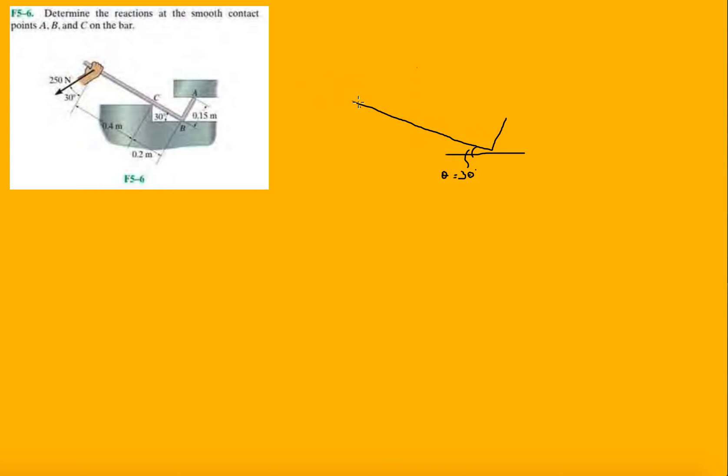But then we begin to question this, right? So we know that this right here is 30, which then if we were to do this, we know that this is 60 because this is a 90 degree triangle.